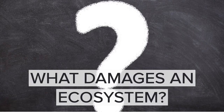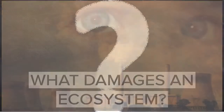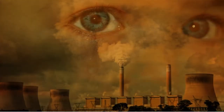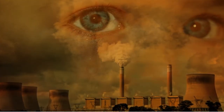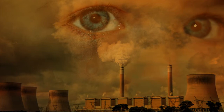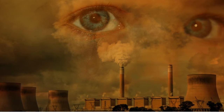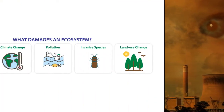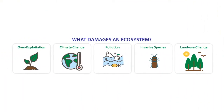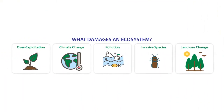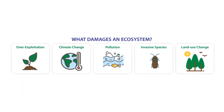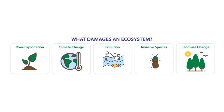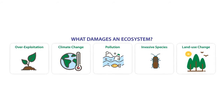Damaged ecosystems cannot effectively support plant and animal life. Several factors can damage, destroy, or degrade an ecosystem. Most of the destructive factors are attributed to biotic and abiotic elements.